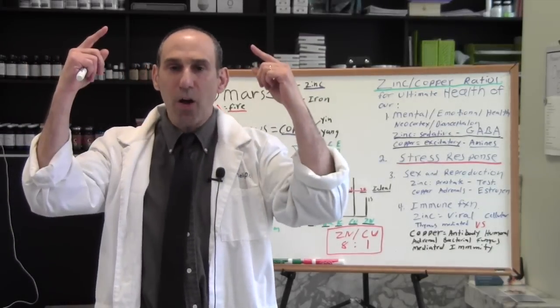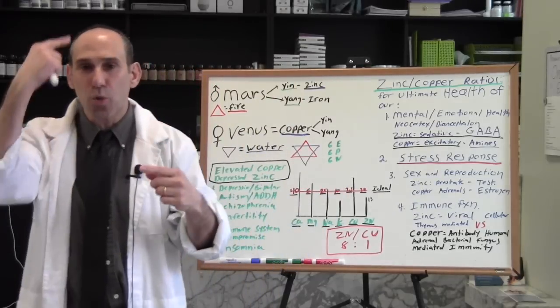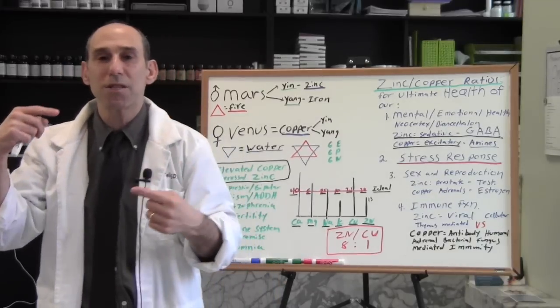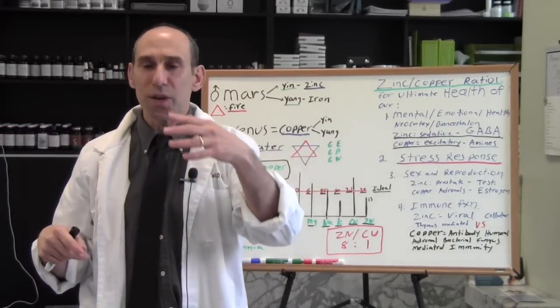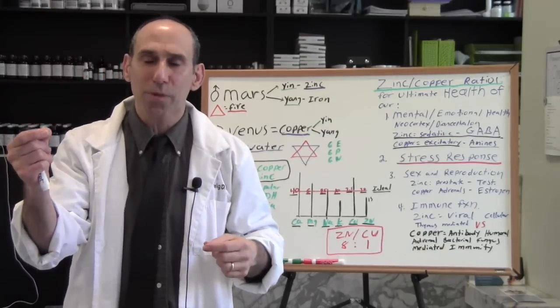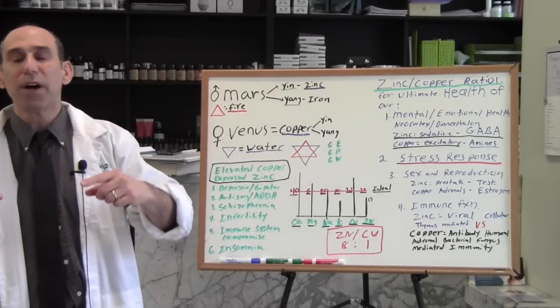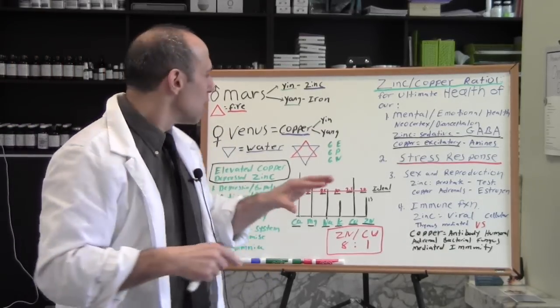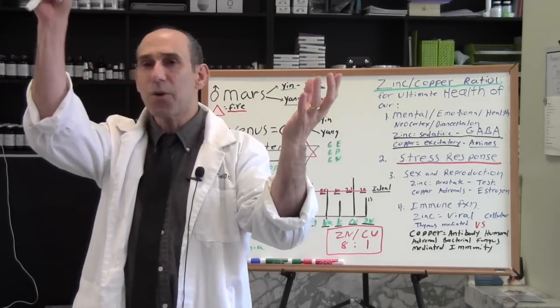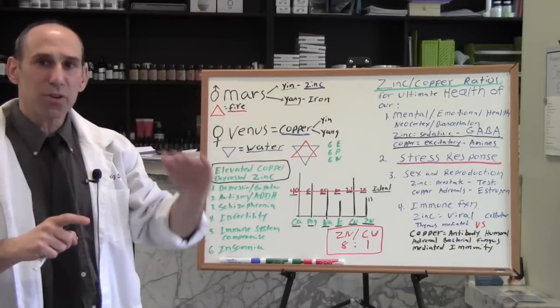That's our 12 organ systems, our 12 meridians, six meridians above, six meridians down below. It also is the 12 cranial nerves, the 12 branches of the solar plexus, the 12 thoracic vertebra. So we see that the 12 has a correspondence to the zodiac. So as above, so below.